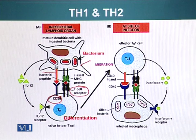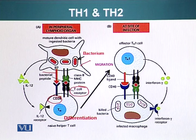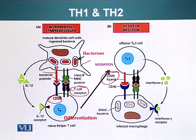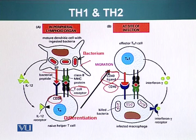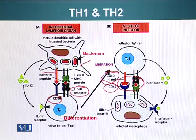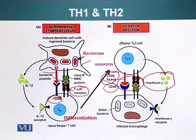Helper T cell type 1 will migrate to the site of infection. When helper T cells are activated by dendritic cells, they also become mature effector cells and start displaying a special protein on their surface called CD40 ligand. The CD40 ligand will interact with CD40, which is present on the surface of macrophages. This protein interaction, combined with the signaling molecule interferon-gamma, will result in activation of the macrophage. Now this macrophage will be able to digest and destroy the pathogen it had captured in its phagosome.